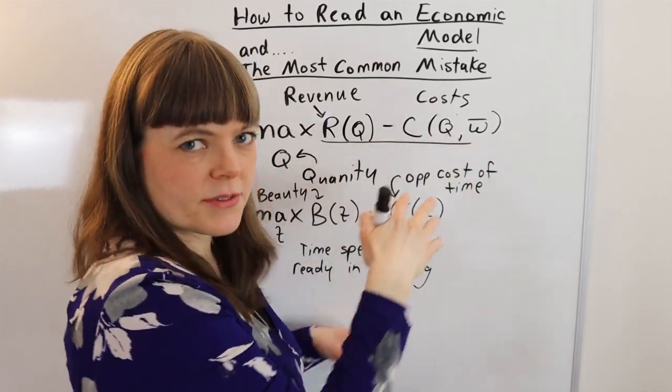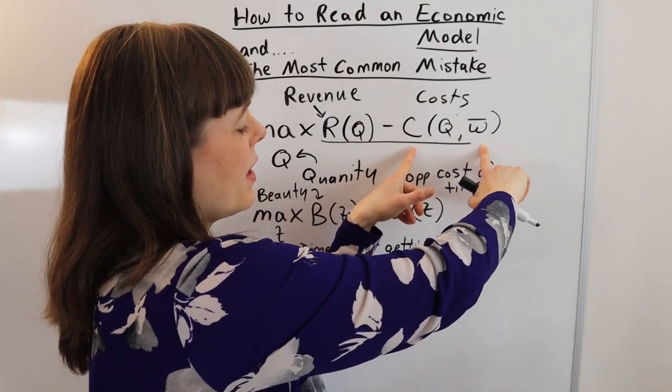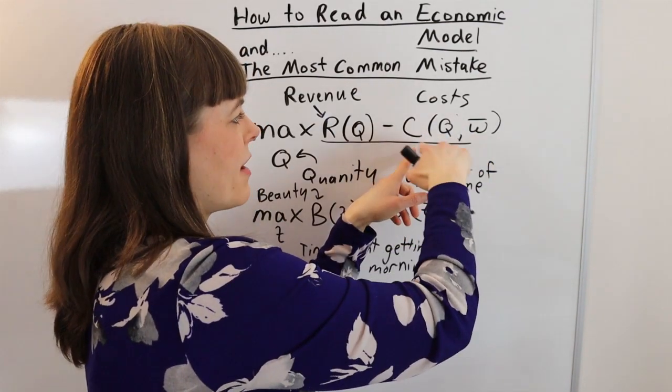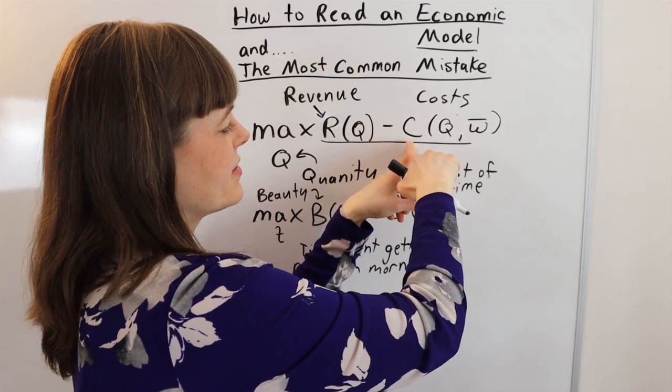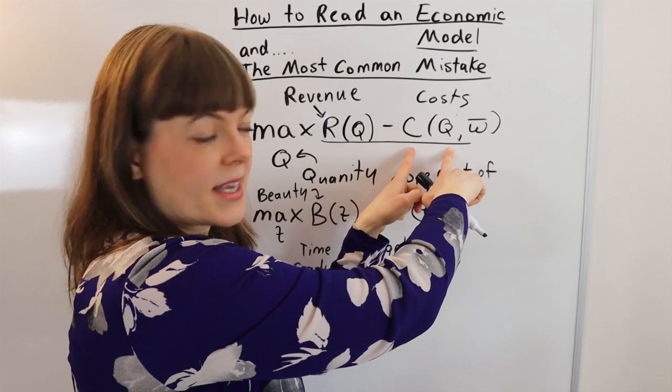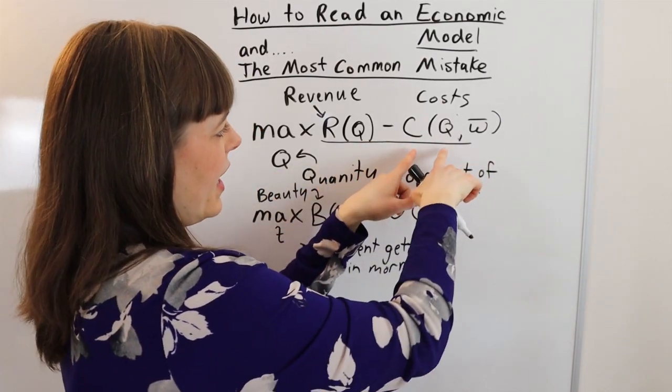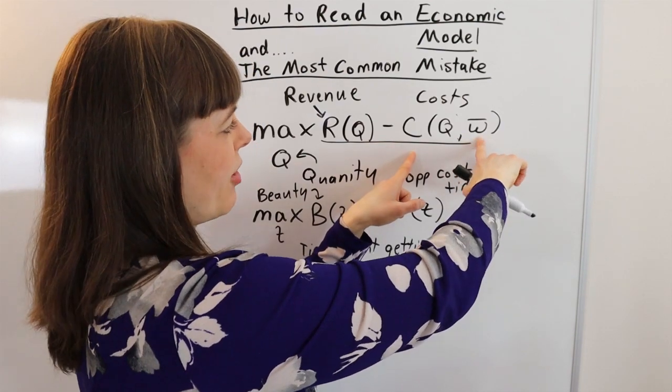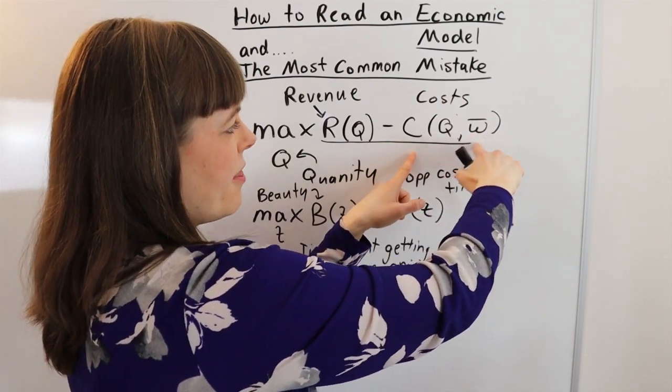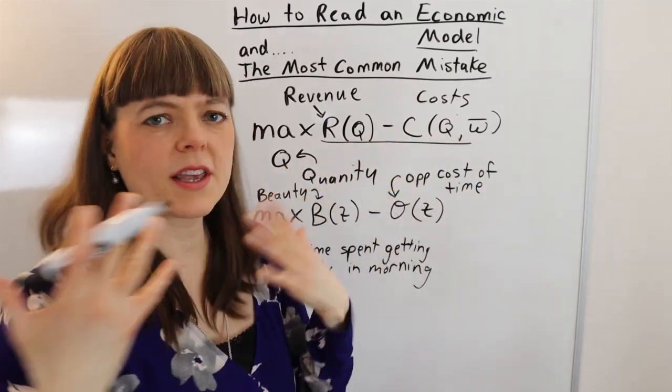It's fairly obvious, but sometimes you have to kind of sit there and think about why is that true? And also, how will that modify this relationship? Because the relationship between the cost and the choice variable is going to be the key driver of the optimal choice. And by putting that exogenous variable in here, we're saying this variable is going to modify this relationship.